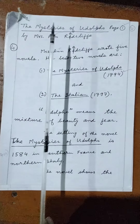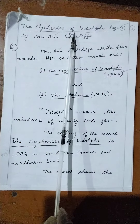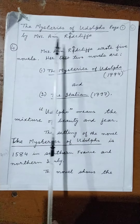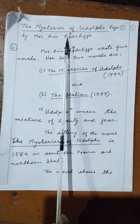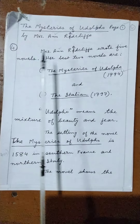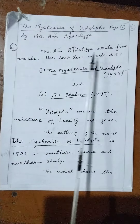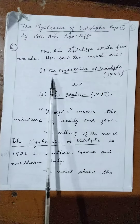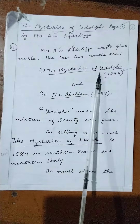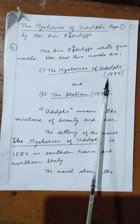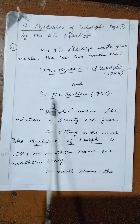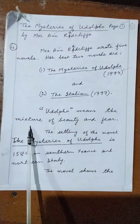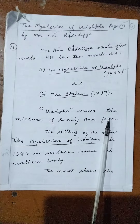The Mysteries of Udolpho by Mrs. Ann Radcliffe. Ann Radcliffe wrote five novels. Her best two novels are The Mysteries of Udolpho (1794) and The Italian (1797). Udolpho means the mixture of beauty and fear.